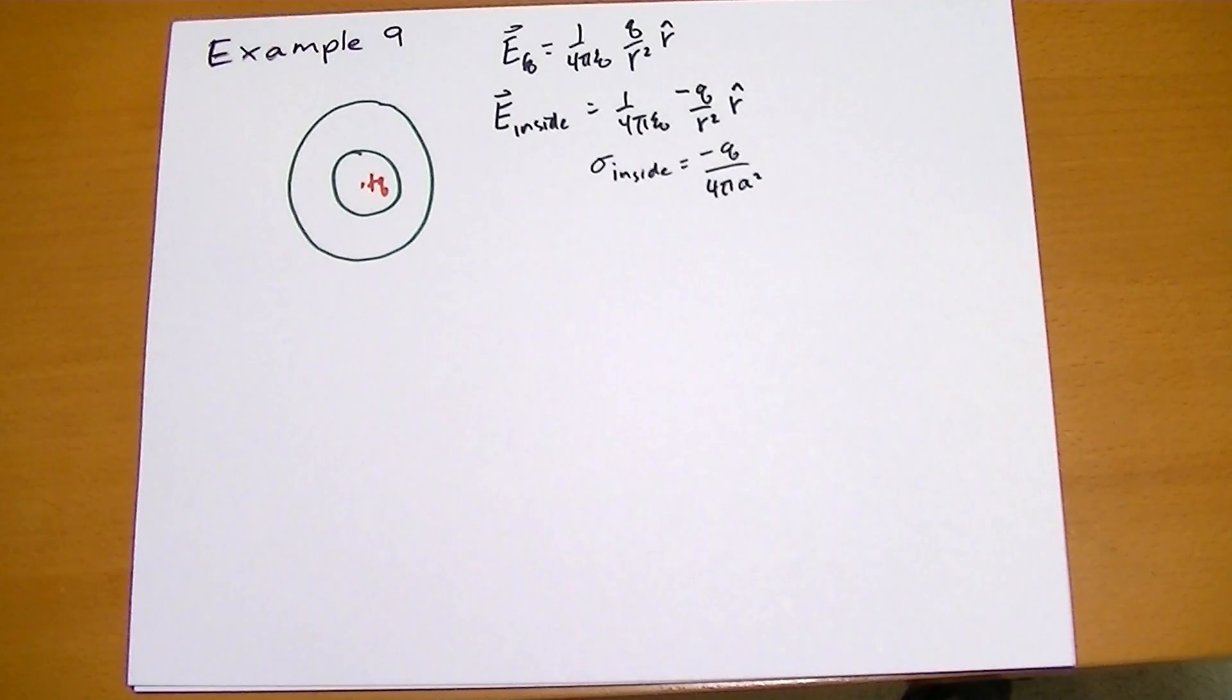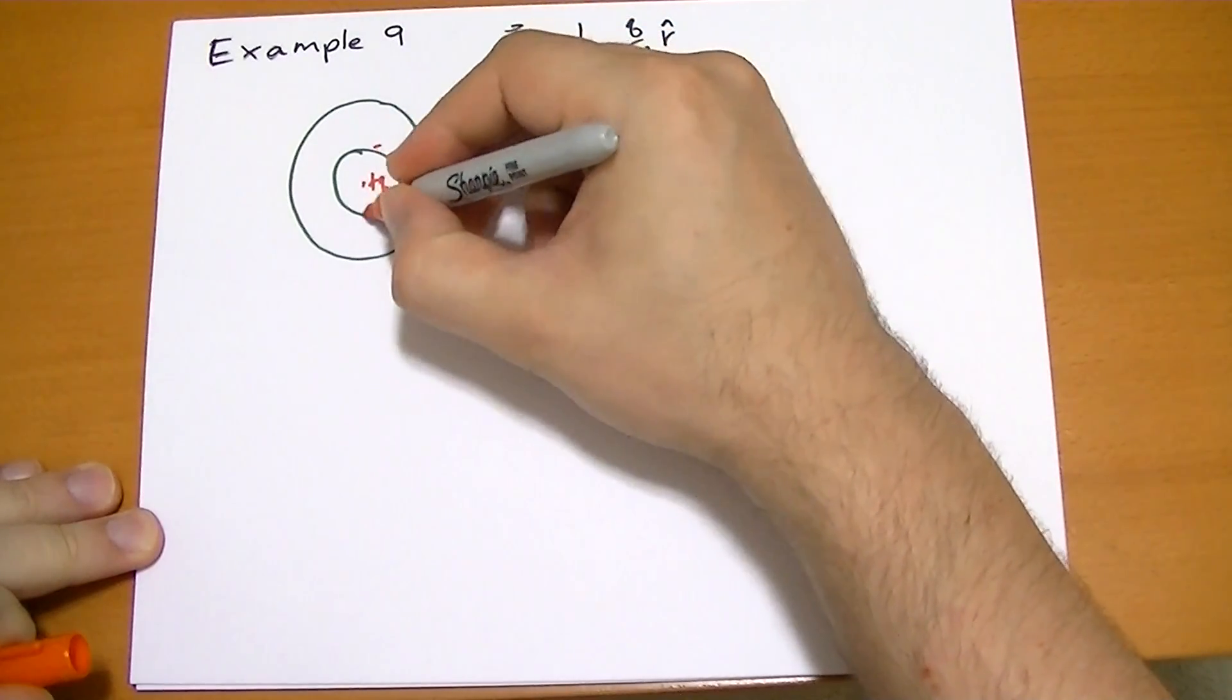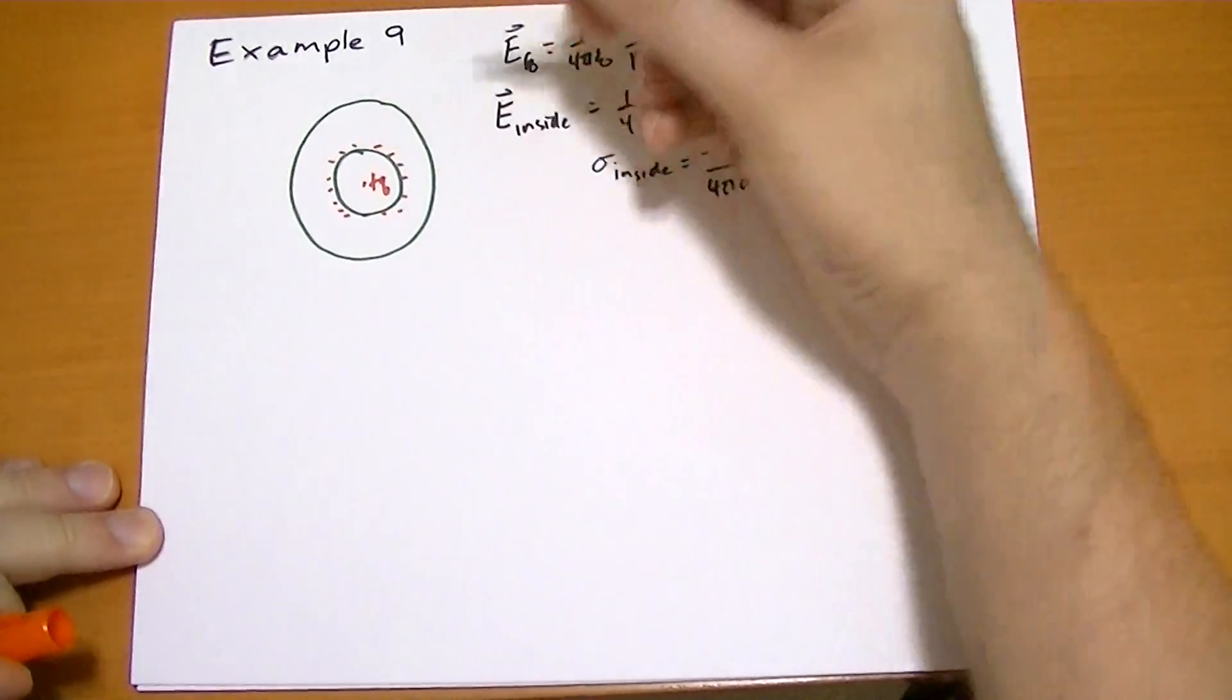So we have a bunch of negative charges dancing around on the surface there. Not dancing - they're stationary. Everything is electrostatic, right?